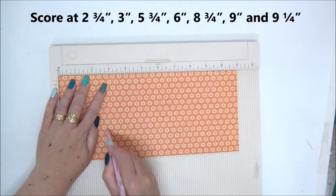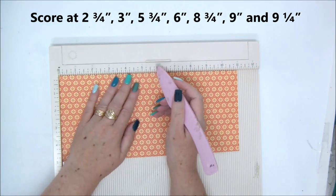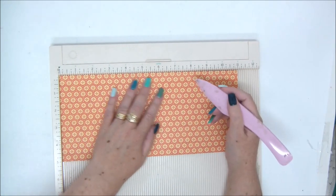Then turn it horizontally and score it at two and three quarters, three, five and three quarters, six, eight and three quarters, nine, and nine and a quarter.